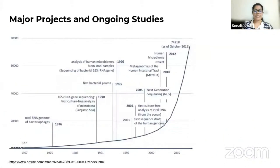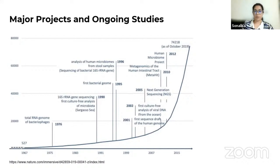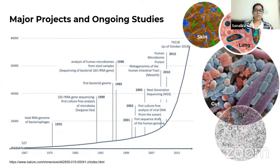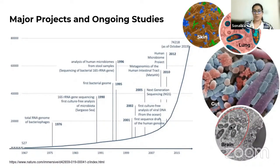However, since the 1990s, microbiome studies were significantly advanced through such major initiatives as the metagenomics of human intestinal tract and the subsequent human microbiome project — huge studies that have been made possible through the advances in metagenomic sequencing.